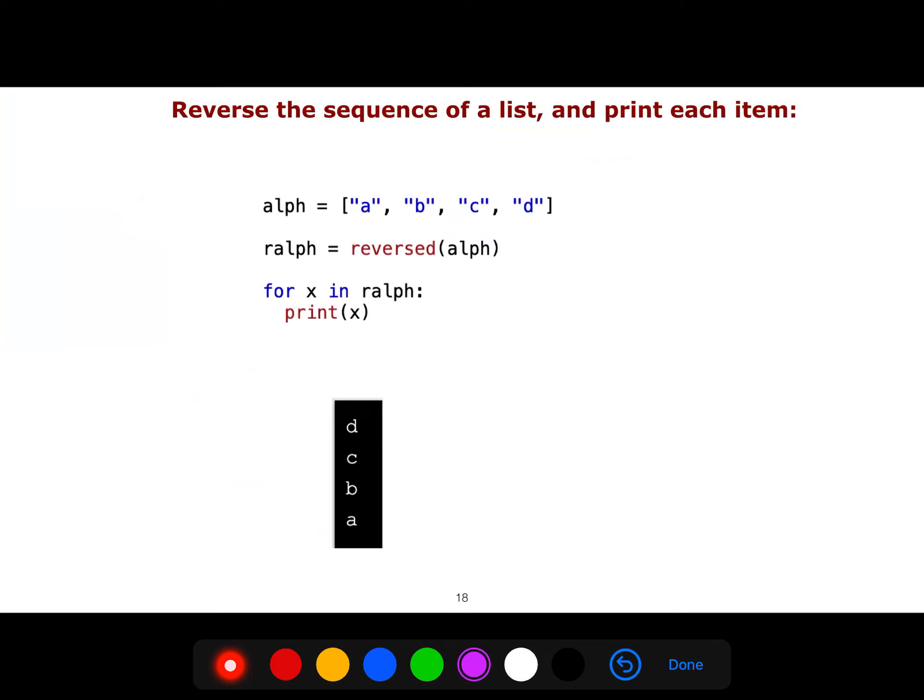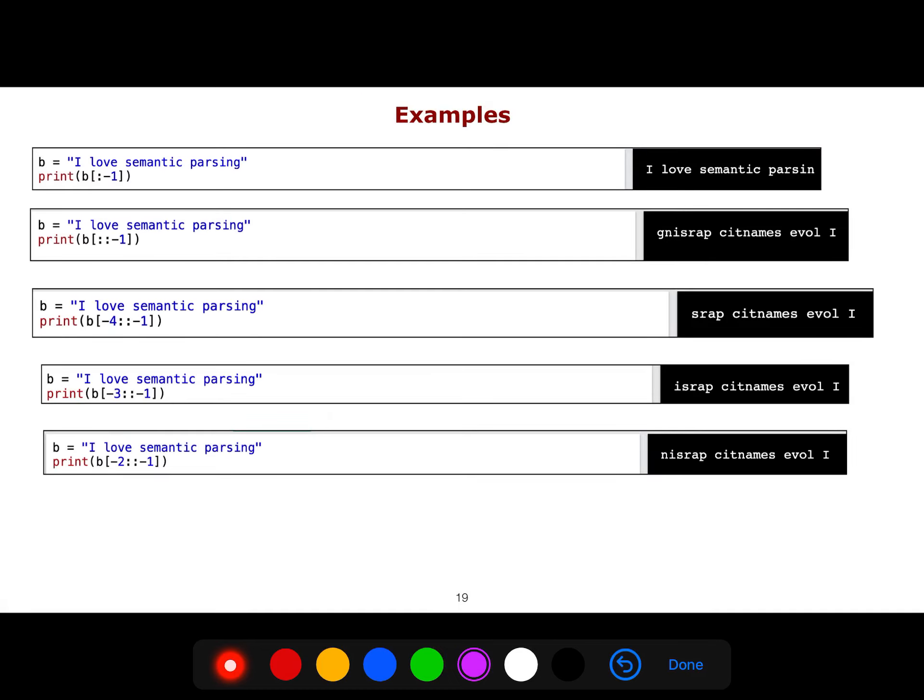What you need to know is just a review, some basic stuff in programming Python. We reverse the sequence of lists using this reverse of alpha. Alpha is a list here. We reverse it. It becomes D, C, B, A instead of A, B, C, D. Let's review what you do with these slicing things. For example, I love semantic parsing. If I just use minus one at the end, you are omitting the last character. But if you are using double colon, like this, double, then you are just reversing everything. It's different from the first example that I told you. Here, we are just reversing. We are reversing. We start from end to the beginning.